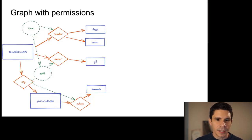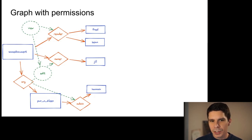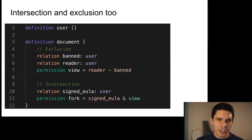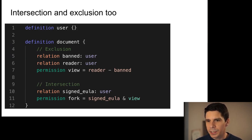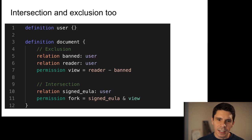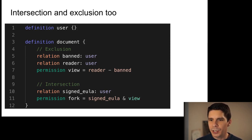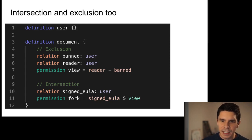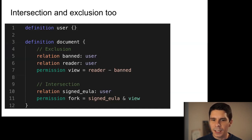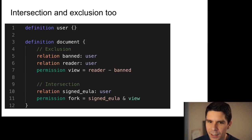Our schema also supports intersection and exclusion, not just unions. Exclusions give you powerful primitives: for example, you can add banned users so that even if someone is already a reader, their view permission is removed. For intersection, a contrived example would be requiring users to have both signed a license agreement and otherwise have view permission in order to fork a document.